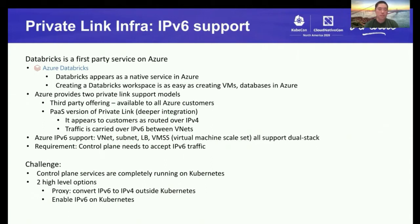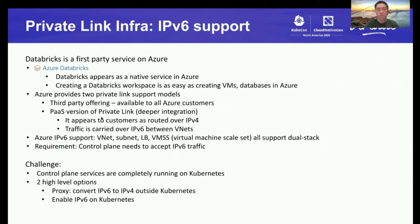Even though it appears to the customer as routed over IPv4 — you connect to the PrivateLink endpoint in your vNet, which is a local IPv4 address — the traffic routed by Azure networking is actually carried over IPv6 between the two vNets. That's the PaaS version of PrivateLink. As a first-party service on Azure, we have to use the PaaS version. So the core challenge for us is that there's a requirement to accept IPv6 traffic on the control plane to make the PrivateLink traffic work.